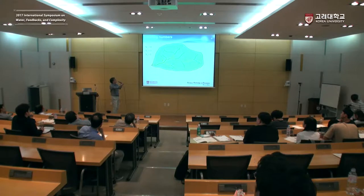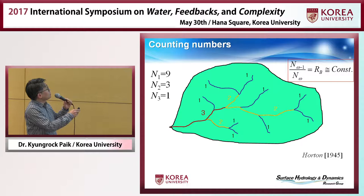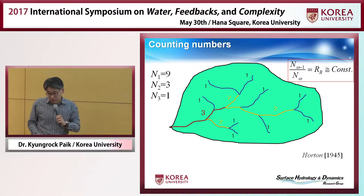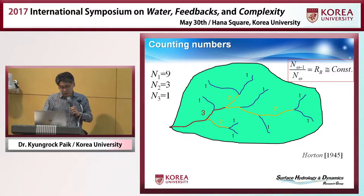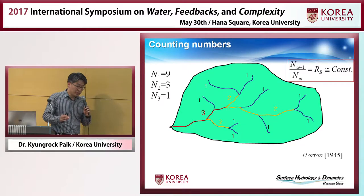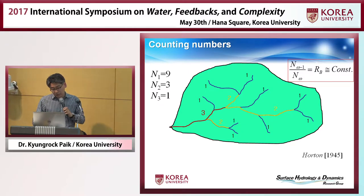When you look at these numbers, you find a very interesting relationship: the ratio of number of streams between nearby orders — we call it the bifurcation ratio — is almost constant for almost any river in the world. This was first found by Horton and is called Horton's law.